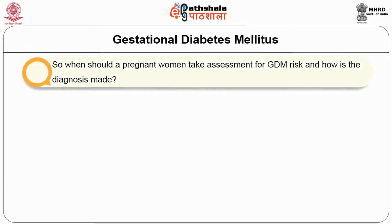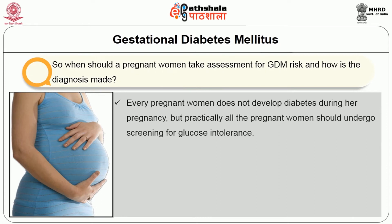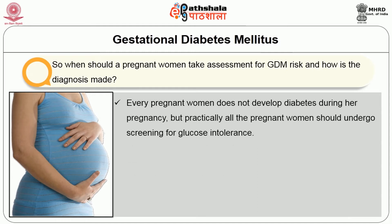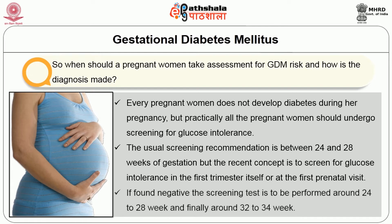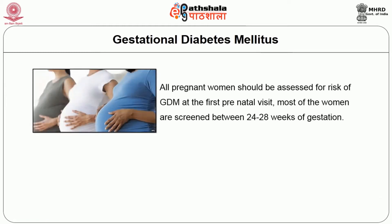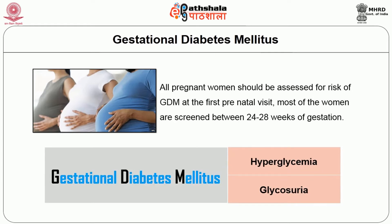So when should a pregnant woman take assessment for GDM risk and how is the diagnosis made? Practically all pregnant women should undergo screening for glucose intolerance. The usual screening recommendation is between 24 and 28 weeks of gestation, but the recent concept is to screen for glucose intolerance in the first trimester itself or at the first prenatal visit. If found negative, the screening test is to be performed around 24 to 28 weeks and finally around 32–34 weeks. All pregnant women should be assessed for risk of GDM at the first prenatal visit.